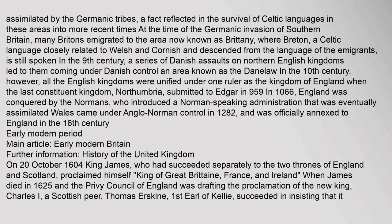At the time of the Germanic invasion of southern Britain, many Britons emigrated to the area now known as Brittany, where Breton — a Celtic language closely related to Welsh and Cornish — is still spoken. In the 9th century, a series of Danish assaults on northern English kingdoms led to them coming under Danish control, an area known as the Danelaw. In the 10th century, all the English kingdoms were unified under one ruler as the Kingdom of England when the last constituent kingdom, Northumbria, submitted to Edgar in 959. In 1066, England was conquered by the Normans. Wales came under Anglo-Norman control in 1282, and was officially annexed to England in the 16th century.